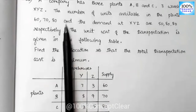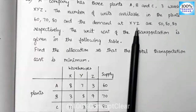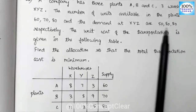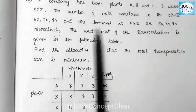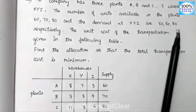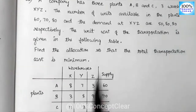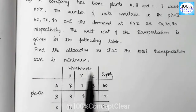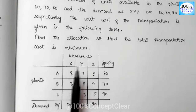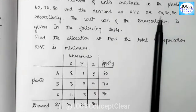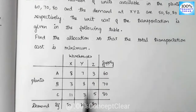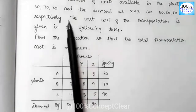Next, find the demand at X, Y, Z. The warehouses X, Y, Z have demands. We note the demand values: X is 50, Y is 80, Z is 80.